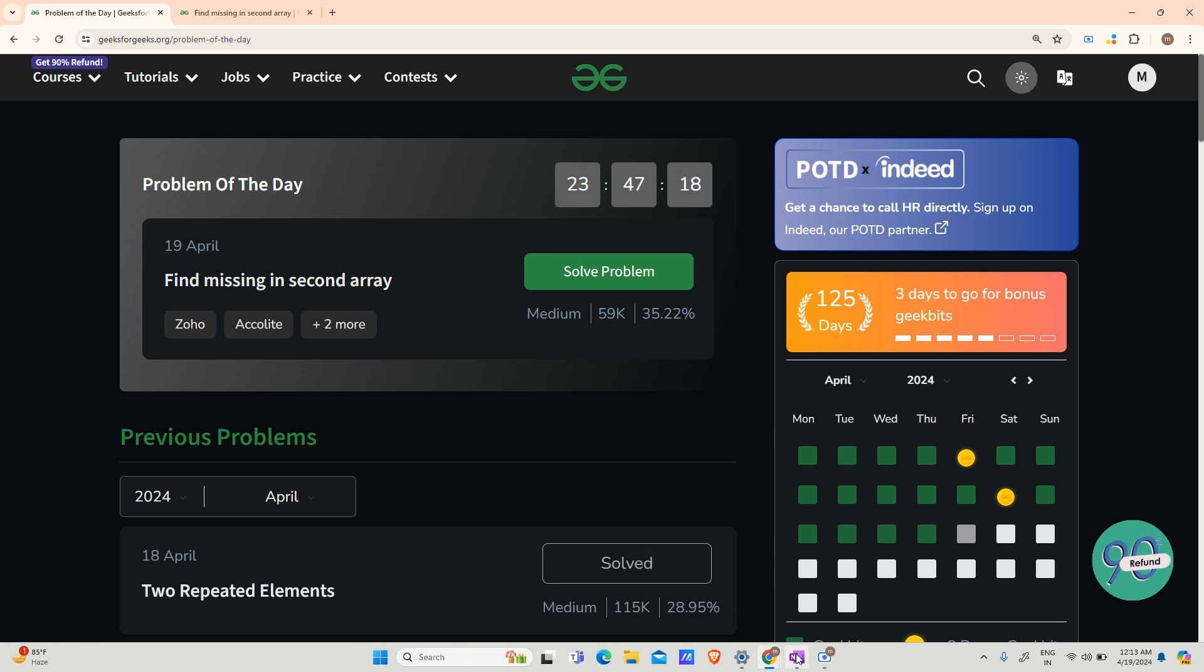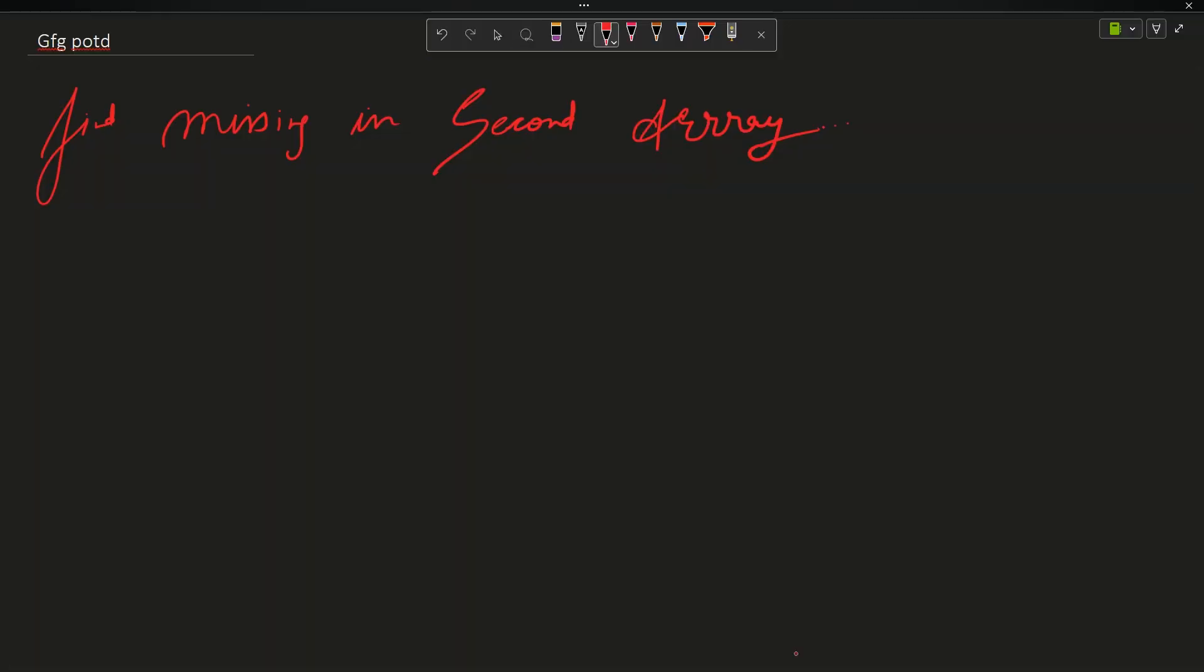The question says you have been provided with two arrays. Array A is 1, 2, 3, 3, 4, 5, 6, 7, 7. This is your array A. And your array B is given to you as 1, 2, 3, 6.